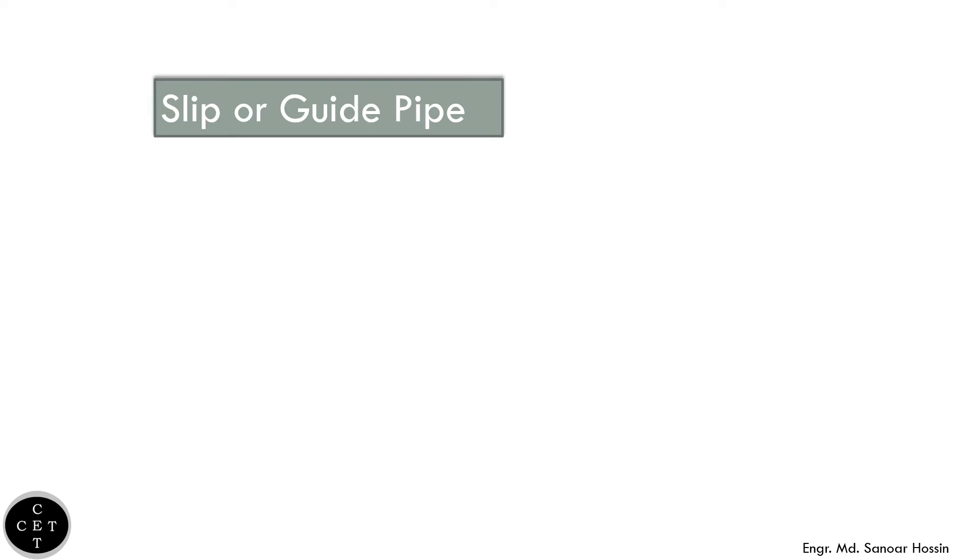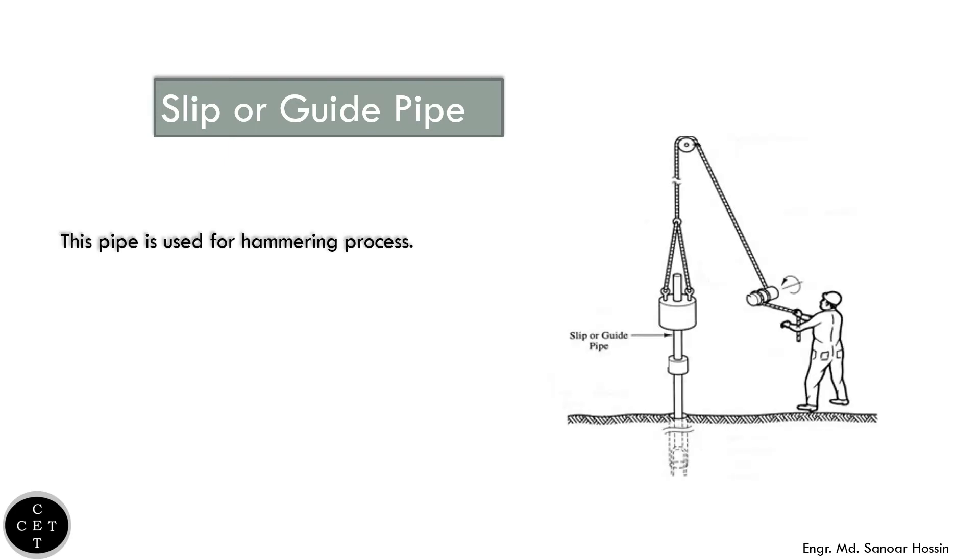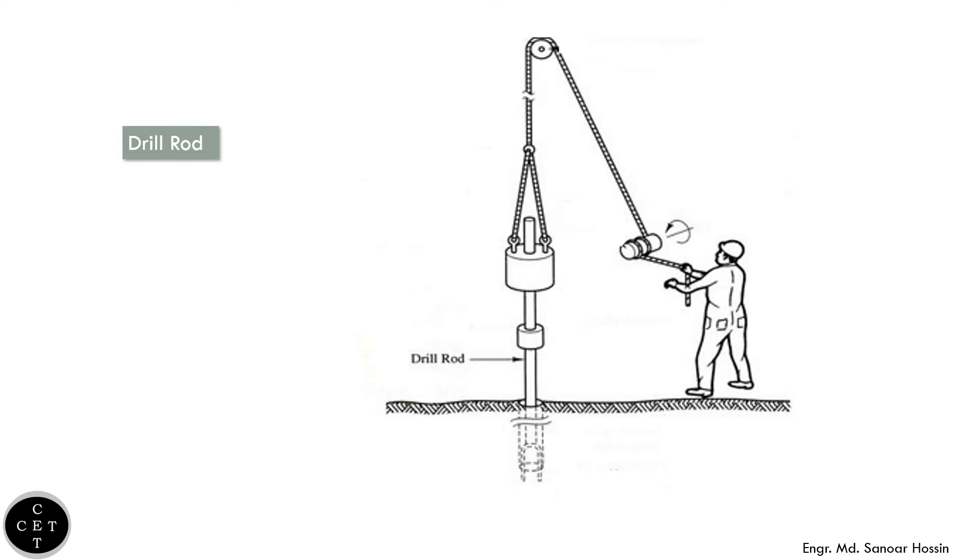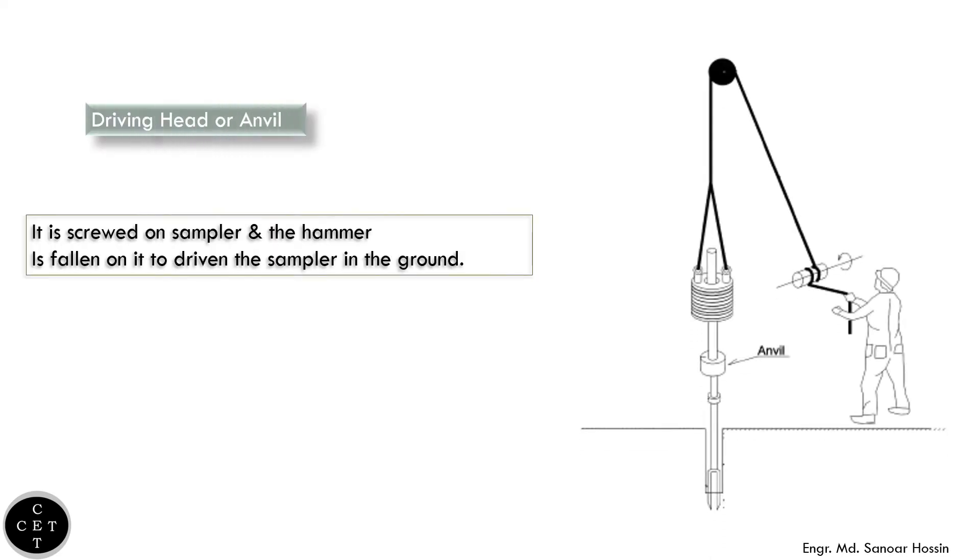Slip or guide pipe, which is used for the hammering process. Donut hammer, which is 63.5 kilograms. Drill rod. Driving head or anvil, which is screwed on the sampler and the hammer is fallen on it to drive the sampler in the ground.